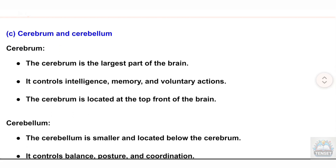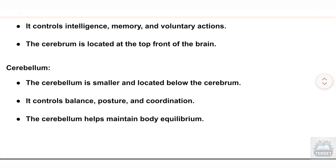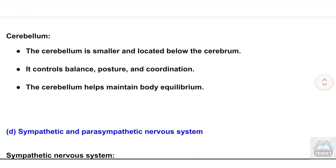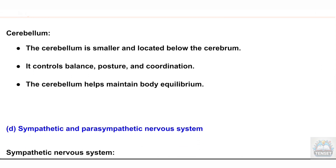(c) Cerebrum and cerebellum. The cerebrum is the largest part of the brain; it controls intelligence, memory, and voluntary actions, and is located at the top front of the brain. The cerebellum is smaller and located below the cerebrum; it controls balance, posture, and coordination, and helps maintain body equilibrium.